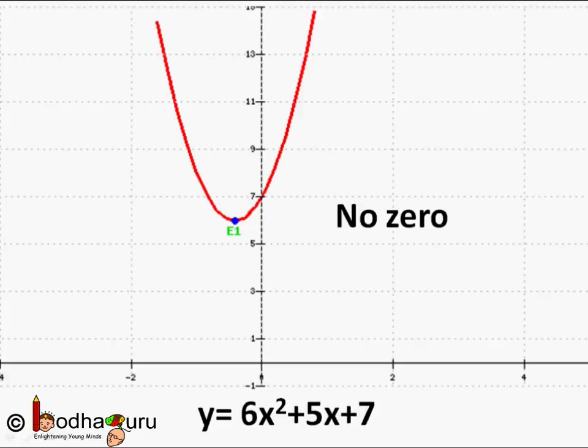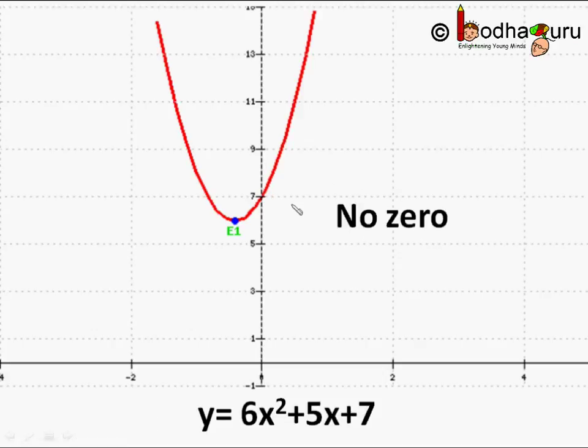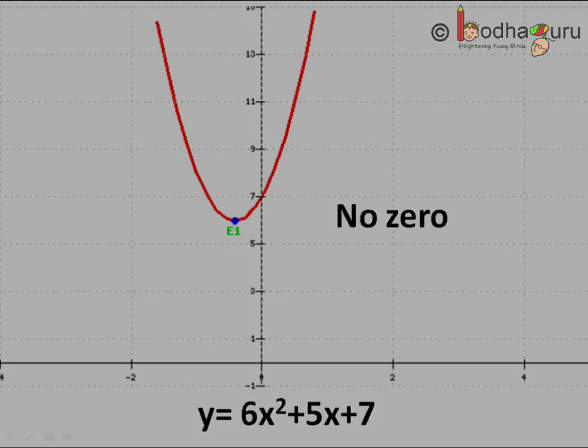Now imagine if you were not knowing it, you would waste your time in an effort to find its zero. But by just drawing a graph, it gave you the information that it has no zero at all. So drawing graphs of a polynomial are very useful. We will learn about finding the zero of a cubic polynomial, that is degree 3, in the next video. Till then, bye-bye.